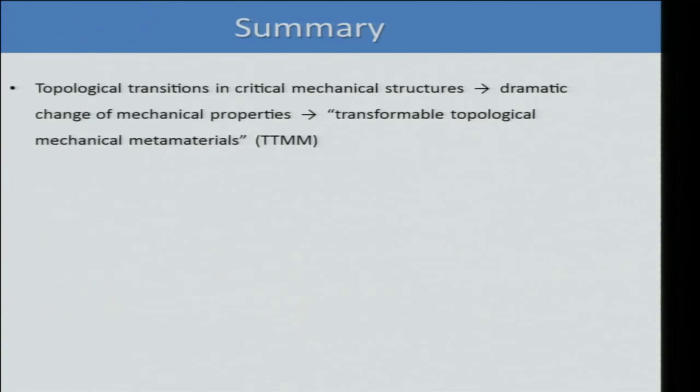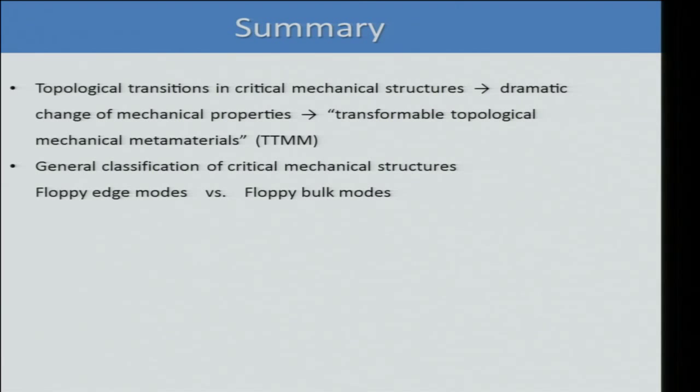In summary: we studied topological transitions in critical mechanical structures — these transitions give dramatic changes in mechanical properties, proposing the new concept of transformable topological mechanical metamaterials. We also studied the general classification of structures approaching mechanical instability, showing that depending on the structure, floppy modes appear in the bulk or on the edge. Finally, we discussed the interplay between entropy, floppy modes, and topology. Thank you for your attention.